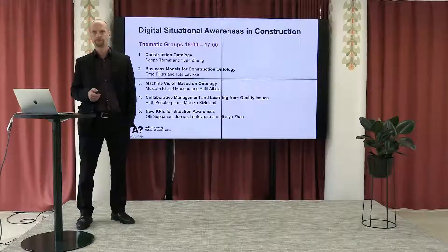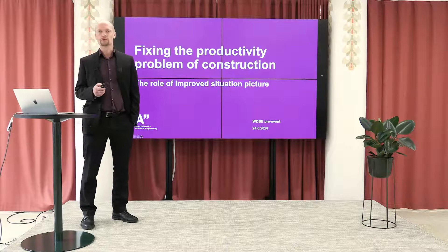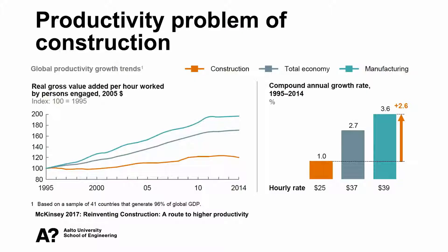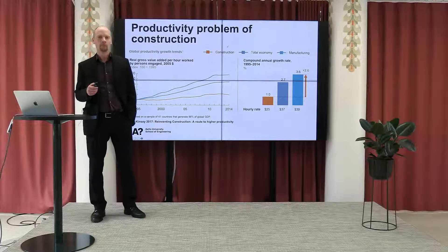The first presentation is about the role of situational awareness in fixing the productivity problem of construction. Everyone may be familiar with this picture about productivity in construction — we have a very stable horizontal line. The orange line represents productivity growth in construction since 1995. All other industry sectors have been increasing rapidly during this time period, but the construction sector shows very stable productivity growth. In Finland, productivity has not measurably increased since the 1980s when we look at productivity data of individual trades.